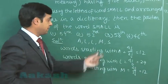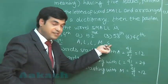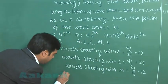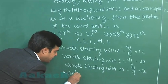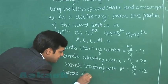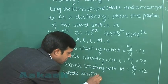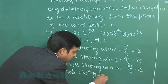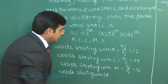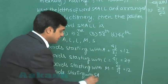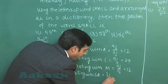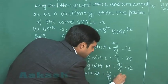Then comes S. Our word is also starting with S. So we fix this term and go for the next letter. So we write words starting with SA. We find when two letters are fixed, it is 3 factorial by 2 factorial, that is 3.